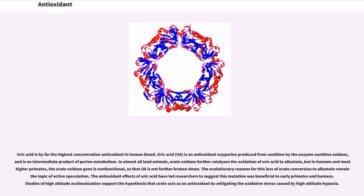Uric acid is by far the highest concentration antioxidant in human blood. Uric acid, UA, is an antioxidant oxypurine produced from xanthine by the enzyme xanthine oxidase, and is an intermediate product of purine metabolism. In almost all land animals, uric oxidase further catalyzes the oxidation of uric acid to allantoin, but in humans and most higher primates, the urate oxidase gene is non-functional, so that UA is not further broken down. The evolutionary reasons for this loss of urate conversion to allantoin remain the topic of active speculation.